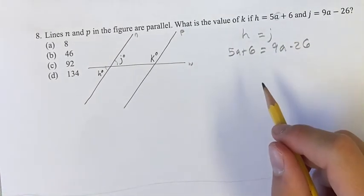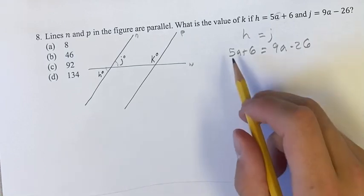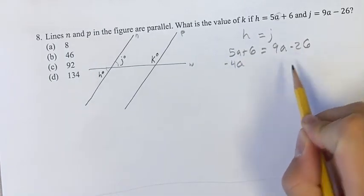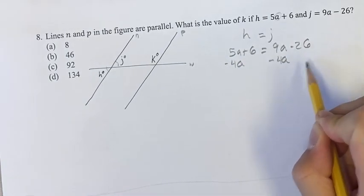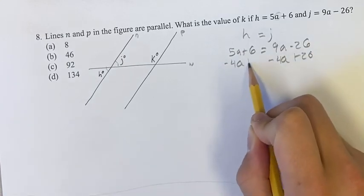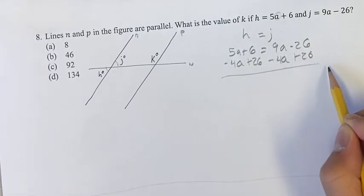If we're solving for a, because then we can find the values of these angles, subtract 4a from both sides and add 26 to both sides. You can do these separately, but it's easier to just do it in one step.